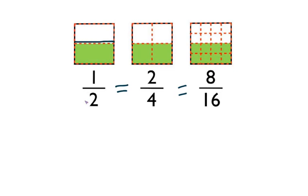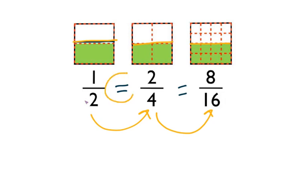But if we look at the amount that each fraction takes up, we can see that they're all equivalent. If we think of this as a chocolate bar, if I eat half of the chocolate bar, that's the same or equal to me eating two fourths of the chocolate bar, which is the same or equal to me eating eight sixteenths. I was just cutting it into a different amount of pieces, but these are all equivalent because they take up the same amount of the whole.